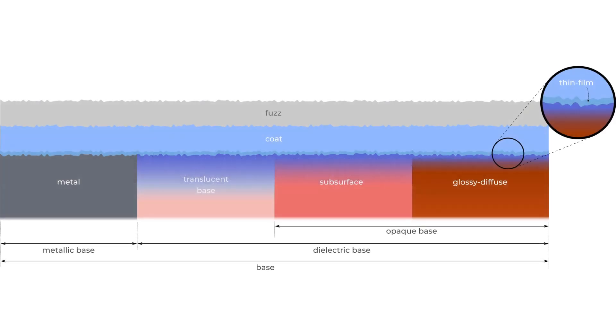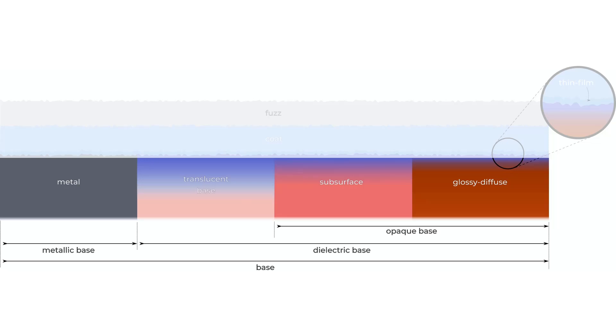It is based on a physical material structure that has proved to be very useful in visual effects and games production. It consists of a number of layers of material on top of a base substrate representing the bulk of the material. This base is either metallic or dielectric or a blend between the two, controlled by the base metalness parameter.